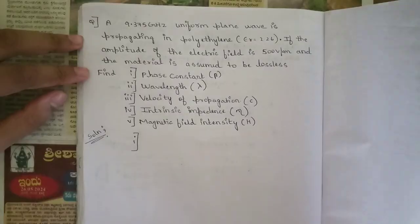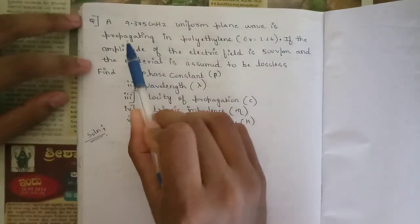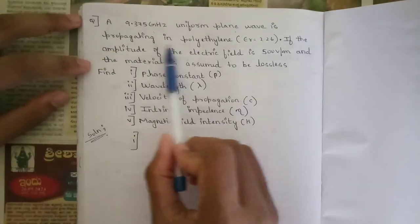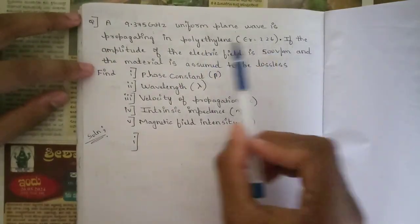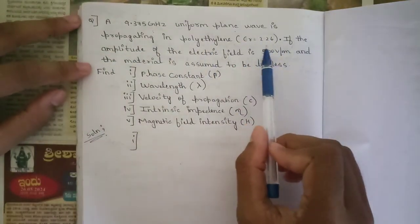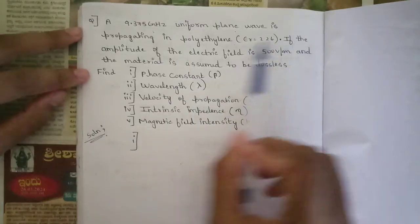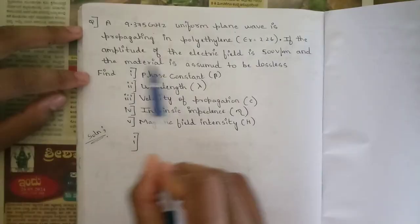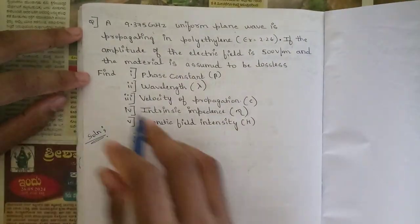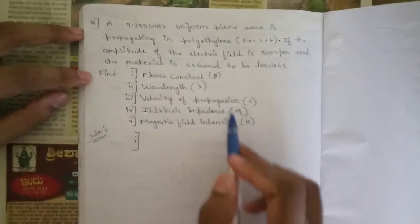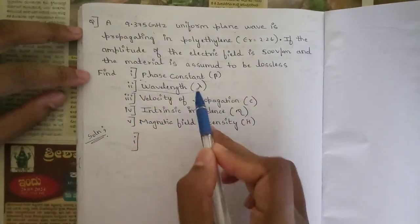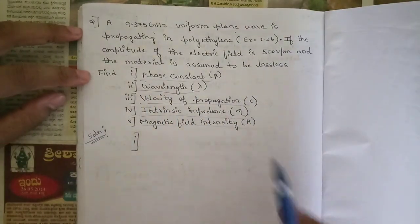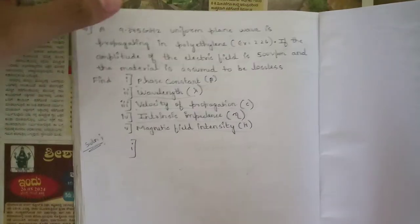The question: a 9.375 gigahertz uniform plane wave is propagating in polyethylene with the standard value of εr = 2.26. The amplitude of the electric field is 500 V/m and the material is assumed to be lossless. We need to find the phase constant, wavelength, velocity of propagation, intrinsic impedance, and magnetic field intensity.